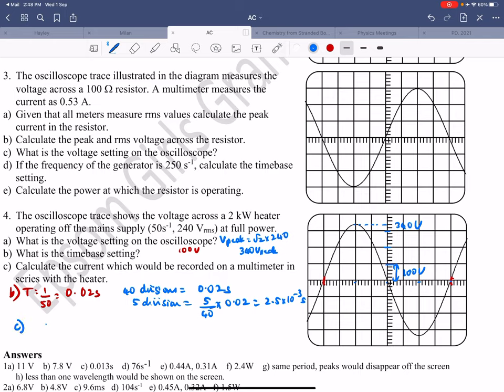And then the last one, calculate the current which would be recorded on the multimeter. So power is voltage times current, and it's always calculated using RMS values. So current is power over voltage. So it's 2 kilowatts, so 2000 watts and my RMS voltage is 240 volts. So when you do that, you get about 8.3 amps. So those are your answers.